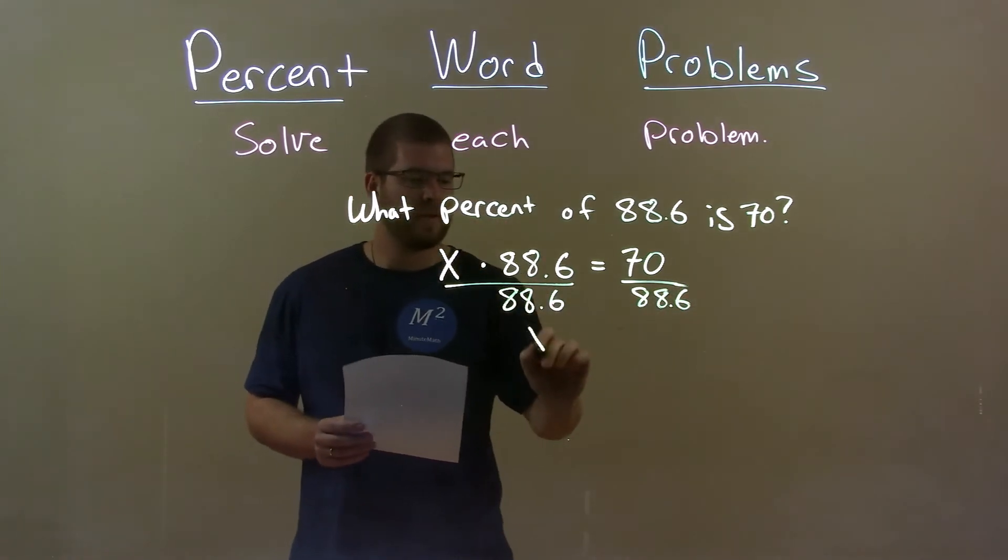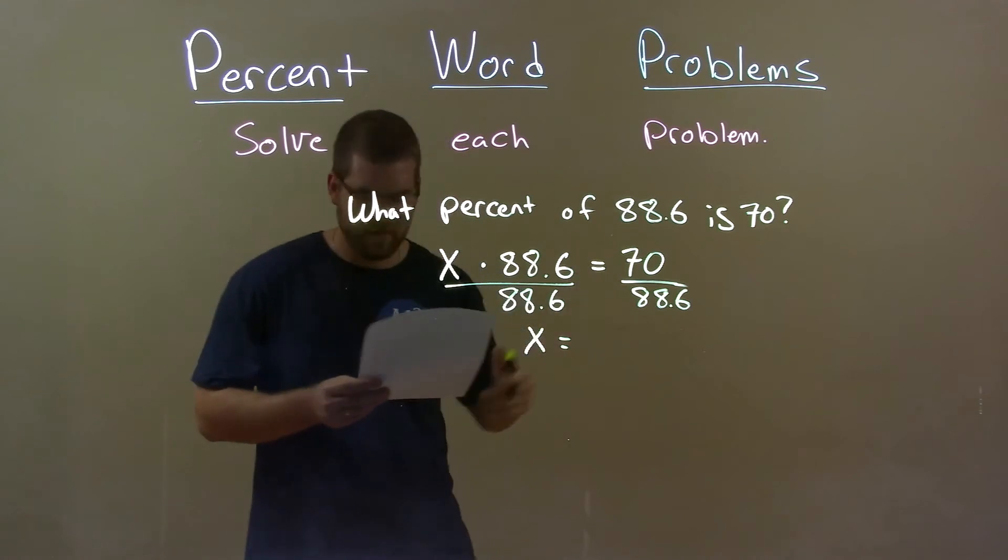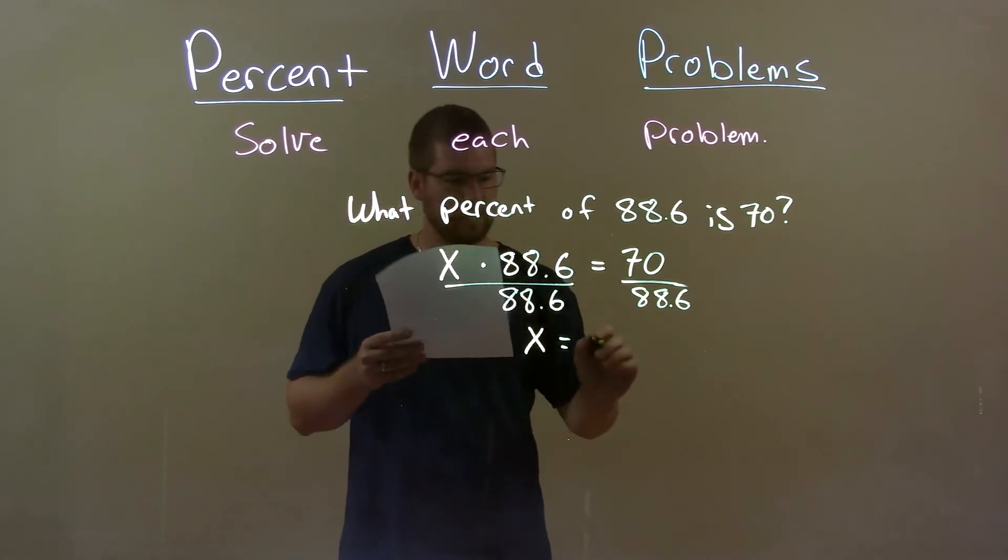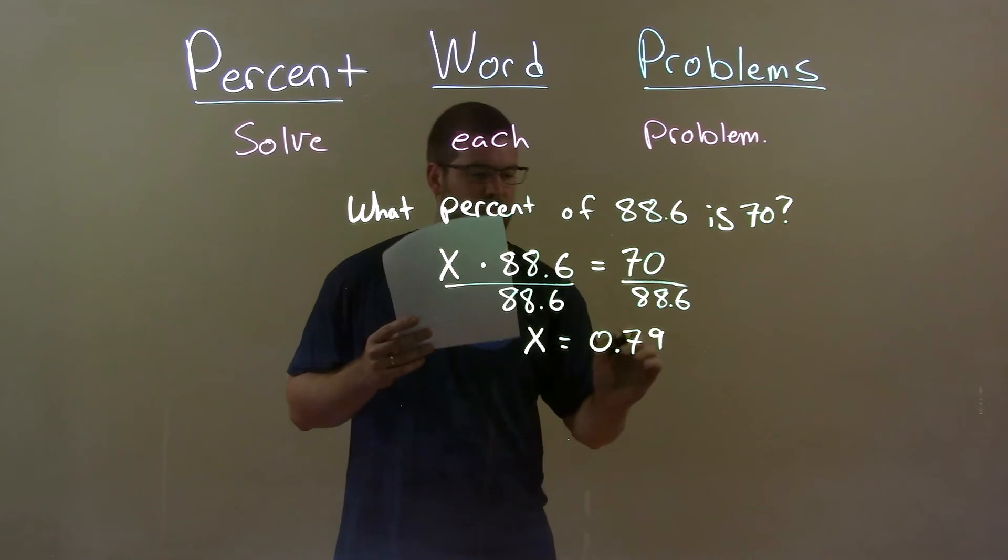Then I got x by itself. Equals 70 divided by 88.6 is 0.79.